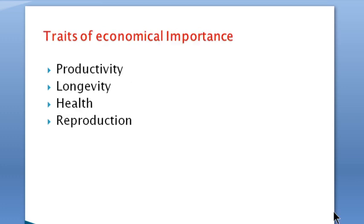For this chapter, we shall focus on traits of economic importance. These are traits concerned with productivity, longevity, health, and production, just to name the major ones. For example, it may not be appropriate to select an animal species or breed that is not adapted to a particular local condition, or if the product that is the objective for selection is not consumed, perhaps because of religious or cultural taboos.